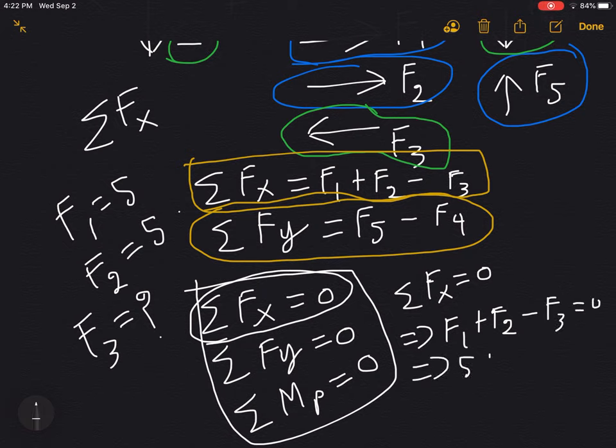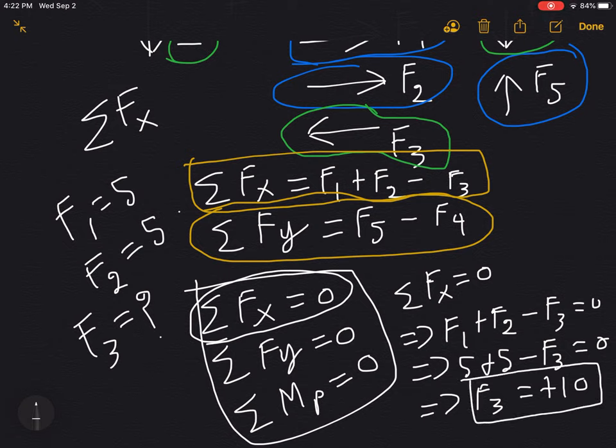That would mean 5 plus 5 minus F3 equals 0. And that means that F3 is equal to, sorry, it's going to be a positive 10. The minus cancels out the minus. So our F3 is figured out. So in this way, we are going to be solving the problems.